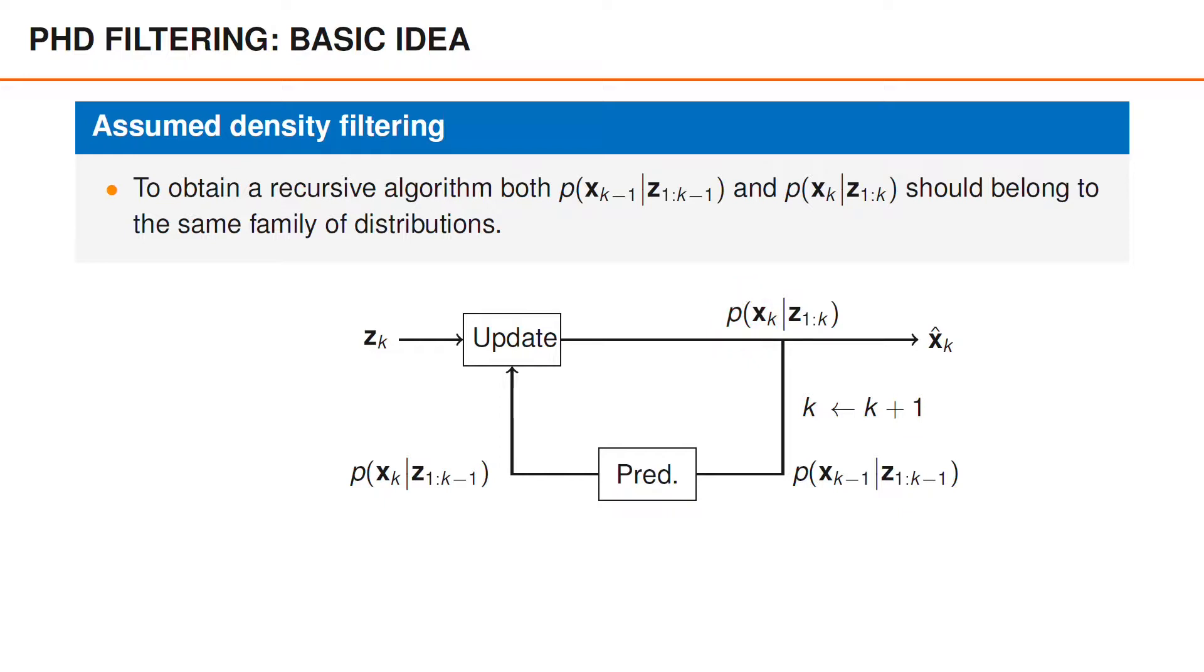In most cases, this implies that we need to approximate the posterior distribution using a distribution within the assumed family of distributions. It is common to also approximate the predicted density using a density from the same family of distributions, but this is not a requirement.